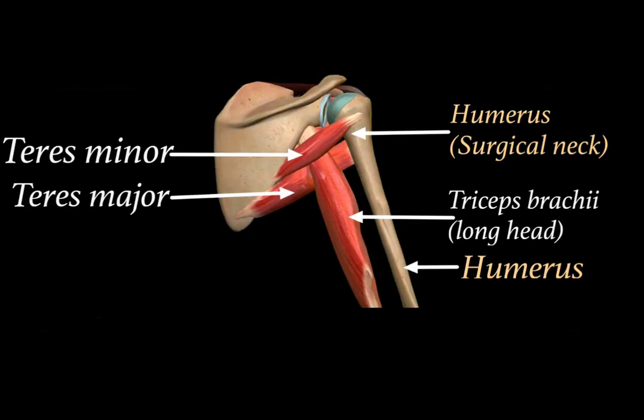On the posterior view of the scapula, when we remove all the superficial muscles, we find teres minor, and below it there lies teres major muscle. Teres major is crossed by the long head of triceps brachii, and lateral to the long head of triceps brachii we have the surgical neck of the humerus bone and the humerus bone itself.